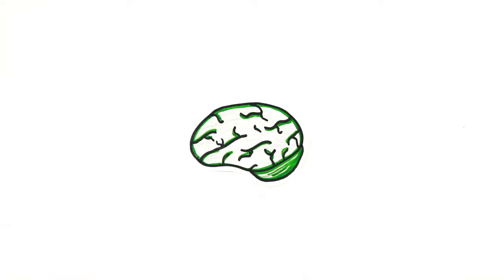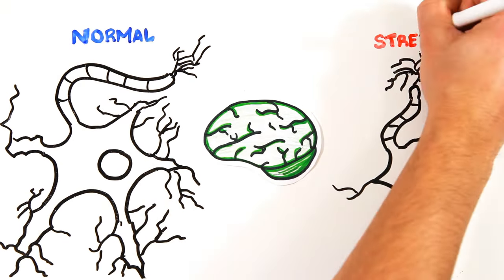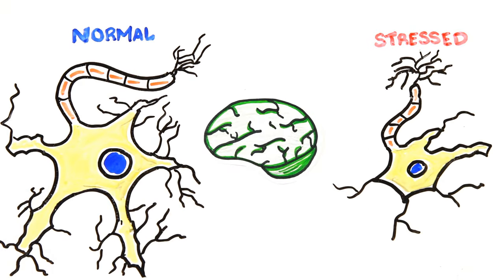The brain also takes a toll. When looking at mice exposed to stress, we see dramatically smaller brain cells with fewer branch extensions than normal mice.